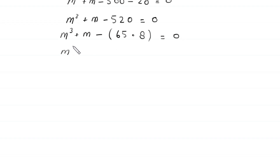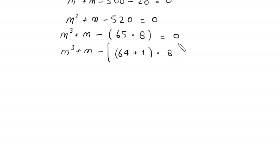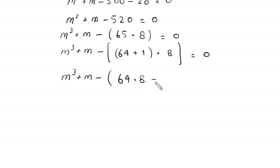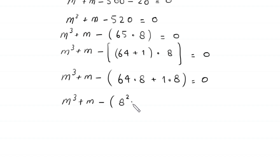We rewrite m³ + m - 520, distributing the 8 to get 64 × 8 + 1 × 8. Then 64 is the same as 8², and 8 is 8 to the power 1, giving us 8² × 8¹.